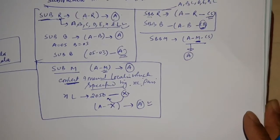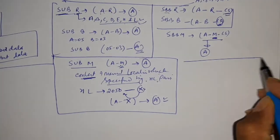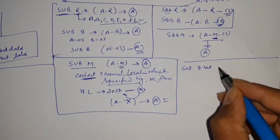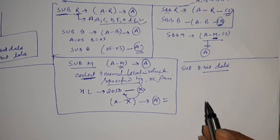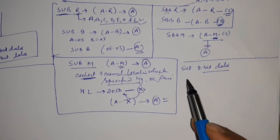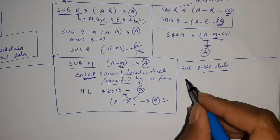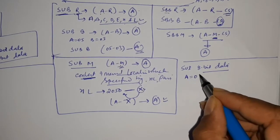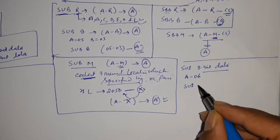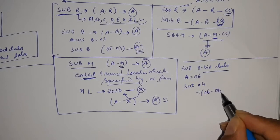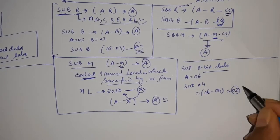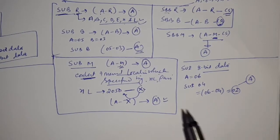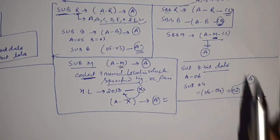Now moving forward to our next instruction: SUI 8-bit data. In this instruction you can directly subtract immediate 8-bit data from the accumulator and the output will be stored in the accumulator. For example, suppose the content of A is 06. If you write SUI 04, the meaning of this will be 06 minus 04, which is 02, and that result will be stored in the accumulator.